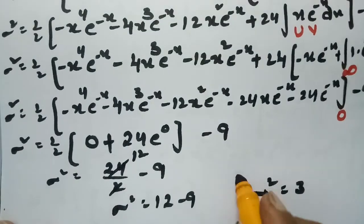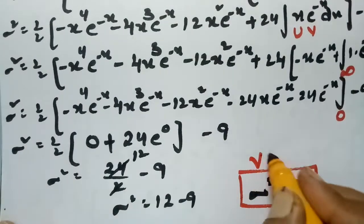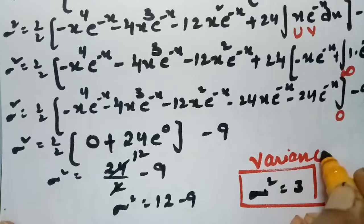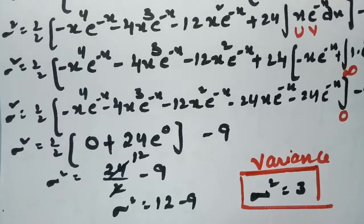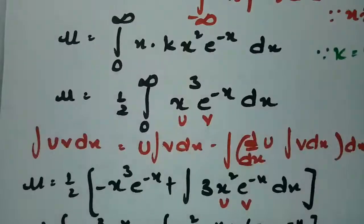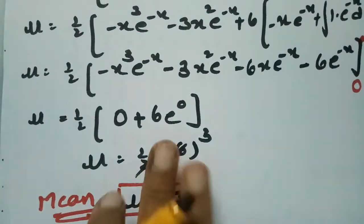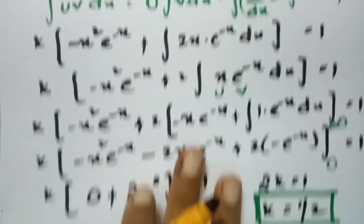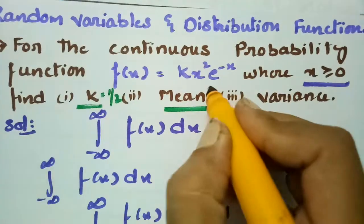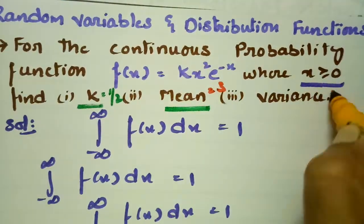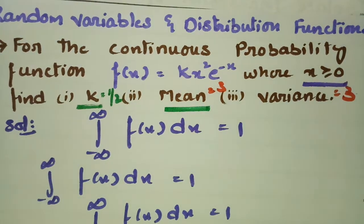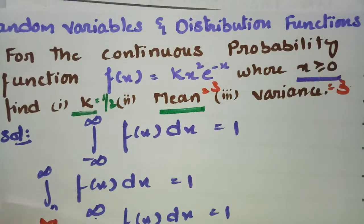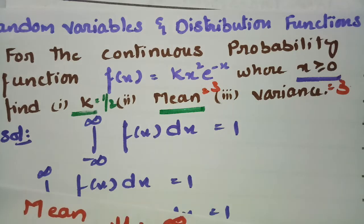Therefore, we got the variance σ² = 3. To summarize: k = 1/2, mean μ = 3, and variance σ² = 3. This is the procedure for solving this continuous probability distribution problem. Thank you for watching and staying till the end — if you liked it, please give a thumbs up.